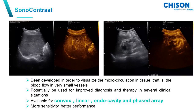SonoContrast has been developed in order to visualize the microcirculation in tissues — that is, the blood flow in very small vessels. It can potentially be used for improved diagnosis and therapy in several clinical situations. This is available for convex, linear, intracavity, and phased array probes.